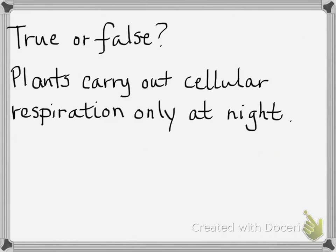True or false: plants carry out cellular respiration only at night. False. Plants carry out cellular respiration all the time, day and night. You have to be making ATP. All cells require ATP — as soon as a cell stops respiring, it's going to die. There's no way plants can wait until nighttime.